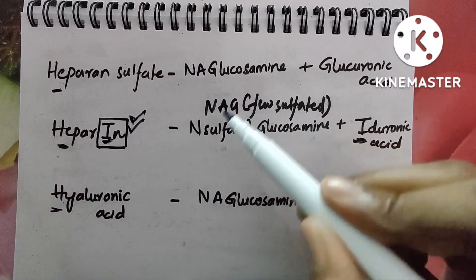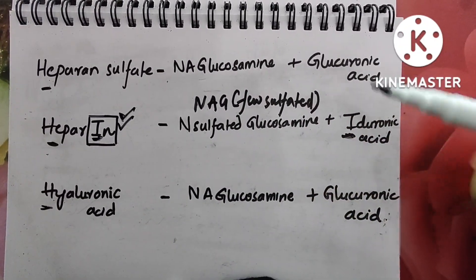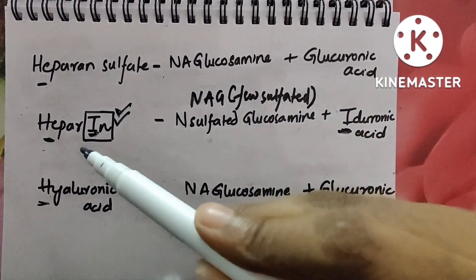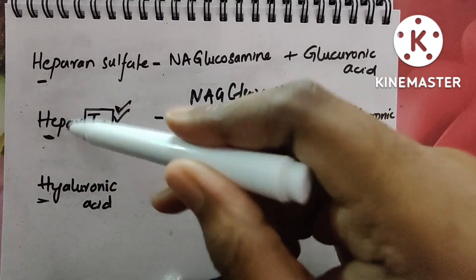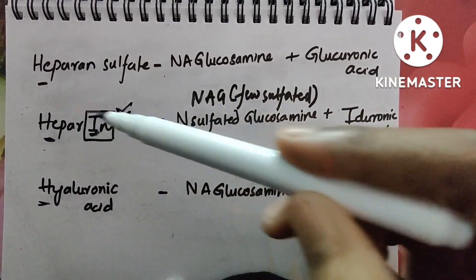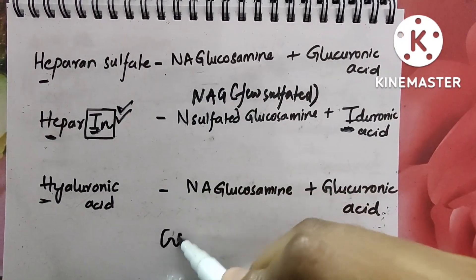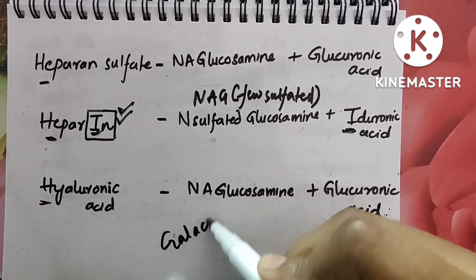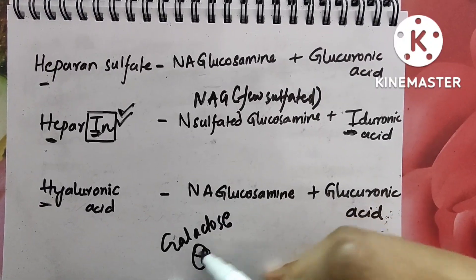N-sulfated glucosamine is essentially the same as NAG with a few sulfur groups added. So to summarize: chondroitin, dermatan, heparin, heparan sulfate, and hyaluronic acid compositions are all covered.